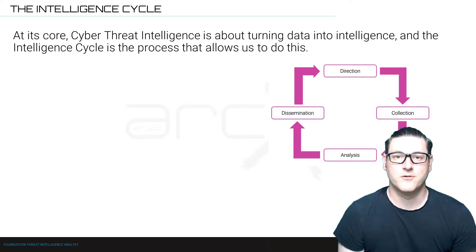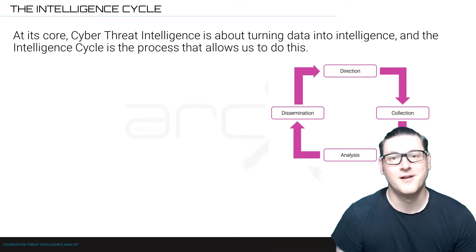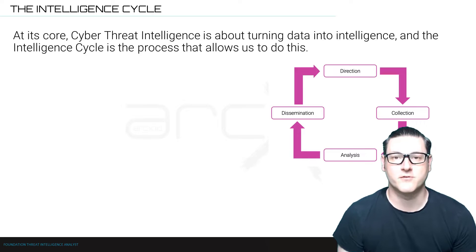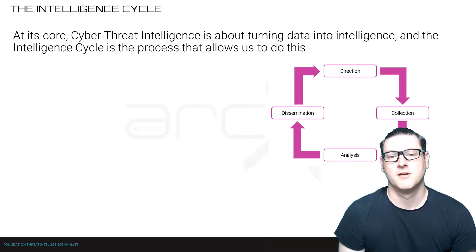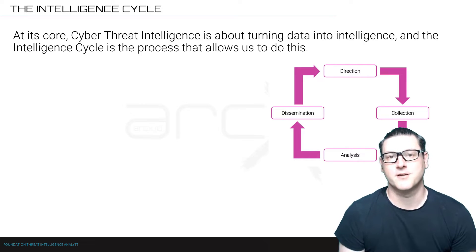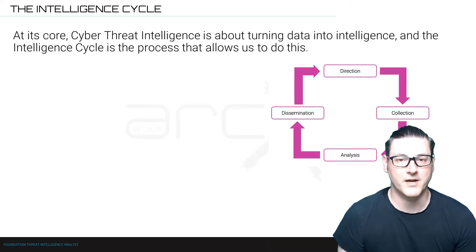How does the intelligence cycle work? It is sequential and it is a cycle. You start off with direction, then it moves into collection, then analysis and dissemination, and then finally back to direction.